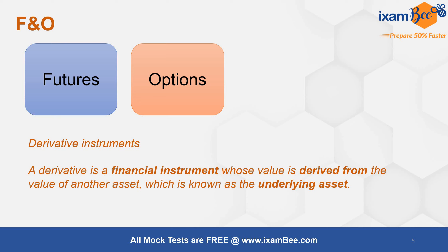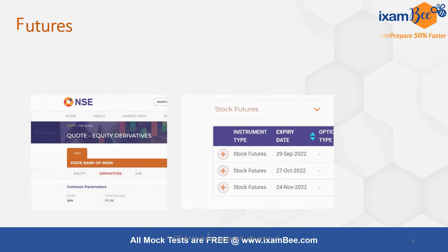This underlying asset can be anything — it could be a commodity, a share, a debt instrument, or even currencies. There are various assets that can act as the underlying asset. The F&O market describes futures and options on various underlying assets, with the major one being stocks or equity shares on which futures and options are built.